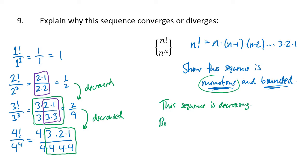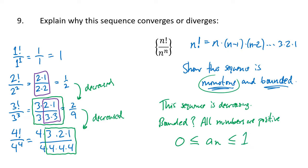Why is it bounded? All of the numbers in this sequence are positive, so a_n is greater than or equal to 0. We start at 1, and all the numbers go down, so the maximum is 1. All the a_n values are fractions between 0 and 1. The sequence is decreasing and bounded, and a theorem from this section tells us it must converge. It doesn't tell us what it converges to — as it turns out, this converges to 0, but that requires further analysis. Good luck!